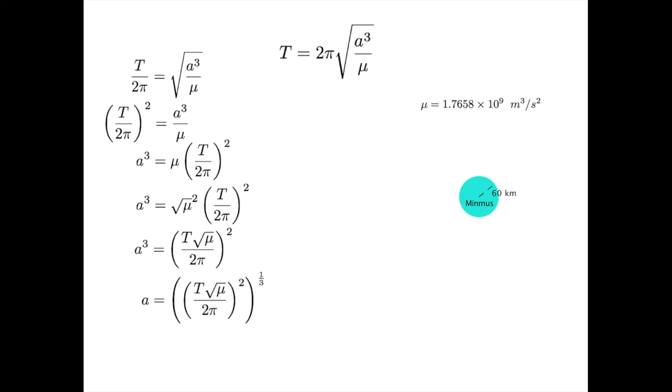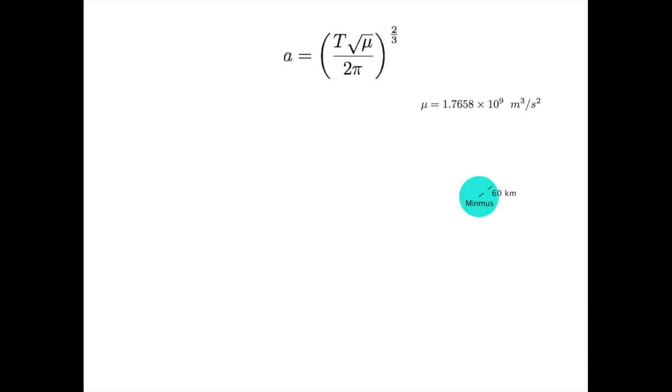Finally, powers of powers can be simplified by multiplying the exponents yielding this. Not the prettiest formula in the world, but it is what it is. 12 hours is 43,200 seconds.